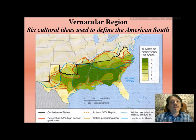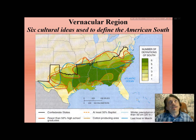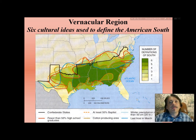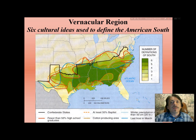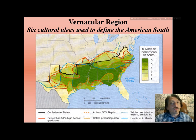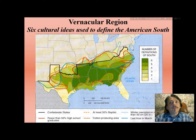Let's use the example of the American South to get used to the idea. We'll consider six defining characteristics: the old boundary of the Confederate States of America — during the 1860s Civil War, a number of states seceded from the Union. The dominant division of Christianity called Baptist is strongly present in the southern states, and the region offers a long growing season with goodly amounts of water and winter rain excellent for agriculture.